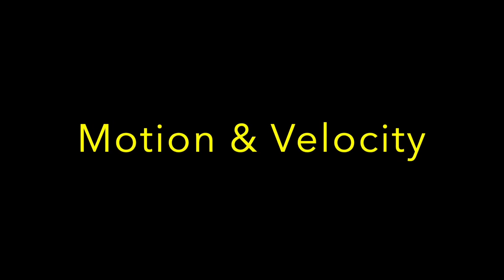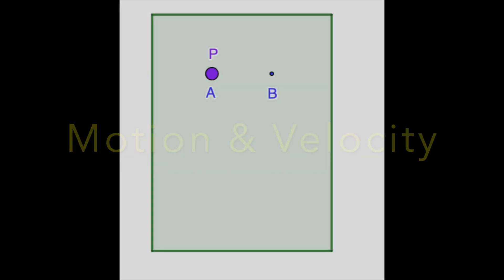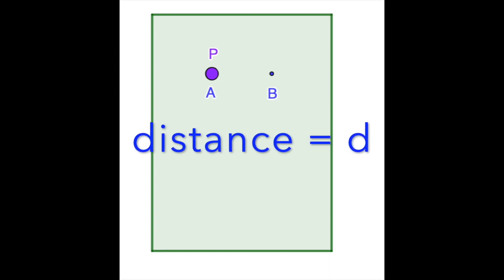Motion and velocity. To illustrate how the model conceptualizes motion, let's consider a simple case of a particle P moving from point A to point B. The distance between A and B is D and the time taken is T. What is the velocity V of the particle?